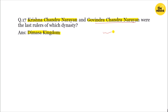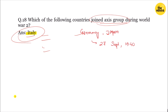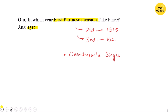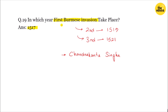Which of the following countries joined the Axis group? This is a history question. The Axis Tripartite Pact was signed in September 1940. The next question is: in which year did the first Burmese invasion take place?